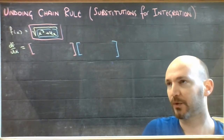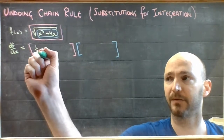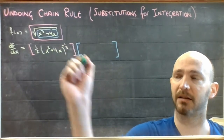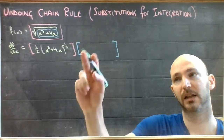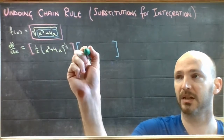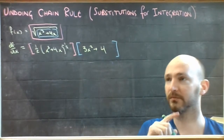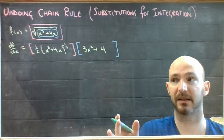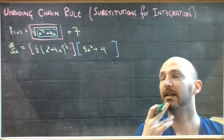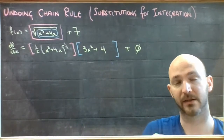The derivative for the pink part — the derivative for any square root — is one half of whatever was inside, to the exponent negative one half. The derivative of the blue layer is just the derivative of this polynomial, which would be 3x squared plus 4. And if I add a plus 7 on the back, the derivative of that 7 is gone, so I don't need to write it anymore.